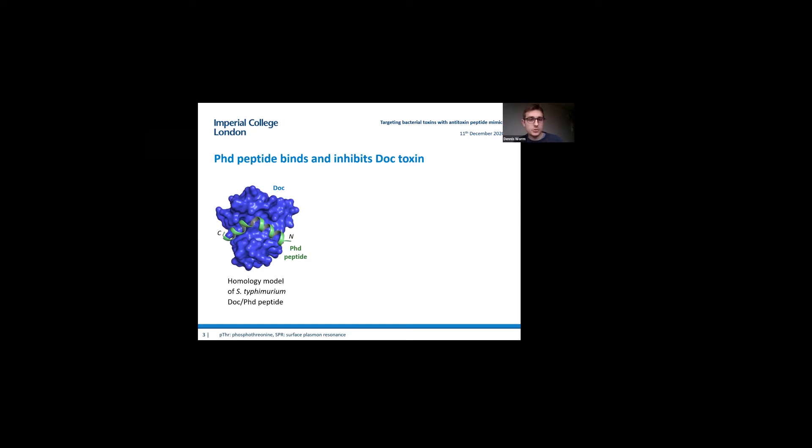There was structural information available for a different organism which showed that the C-terminal part of the antitoxin protein is responsible for binding to the Doc toxin. We generated a homology model of the Salmonella variant, showing here the C-terminal PhD peptide bound to the Doc toxin in a helical conformation. The peptide has two helical segments separated by a kink in the middle. We synthesized this peptide and wanted to know if it is actually an inhibitor.